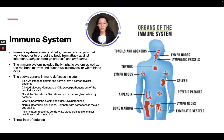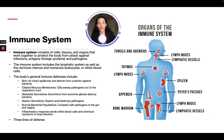The body's general immune defenses include your skin, which is an intact epidermis and dermis that form a barrier against bacteria; ciliated mucous membranes, where cilia sweep pathogens out of the respiratory tract; glandular secretions from exocrine glands that destroy bacteria; gastric secretions, where gastric acid destroys pathogens; normal bacterial populations that compete with pathogens in the gut and vagina; and inflammatory responses that send white blood cells and chemical reactions to stop infection. There are three lines of defense.